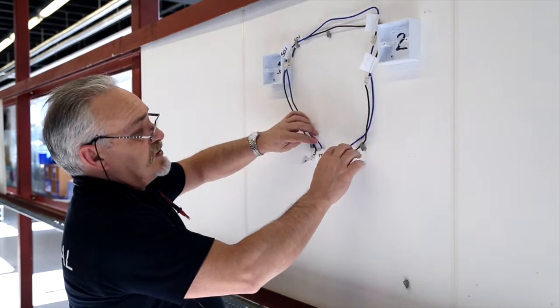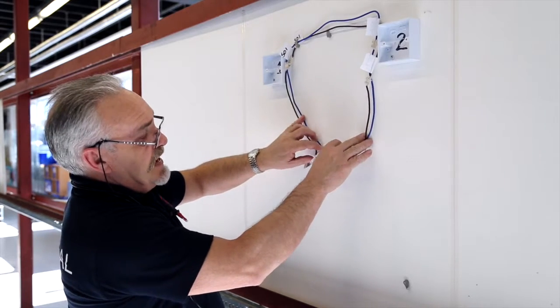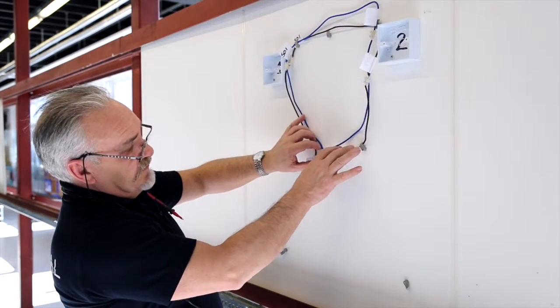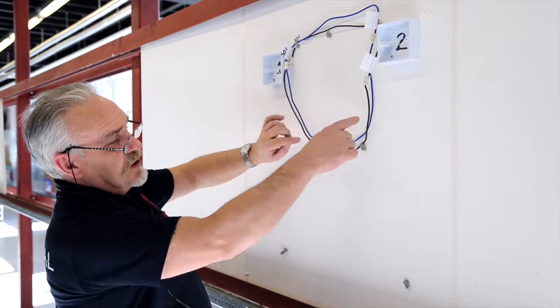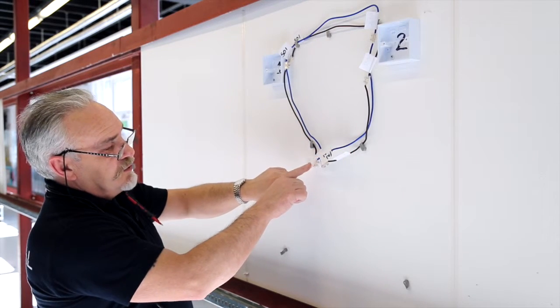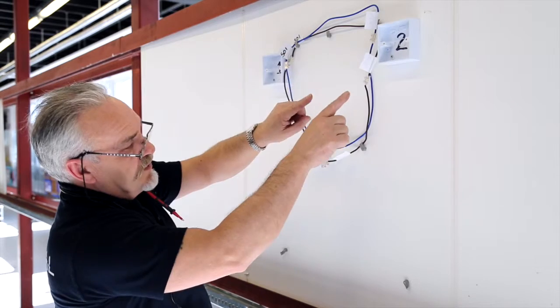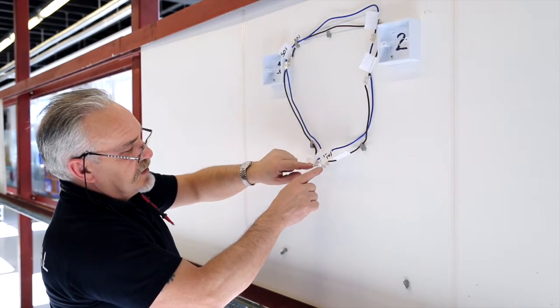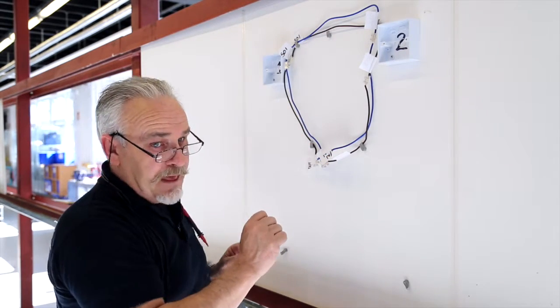That's it. So essentially what we have here is what we call our figure of eight. Whether they cross over. So incoming neutral, outgoing line, all the way round to the outgoing neutral.